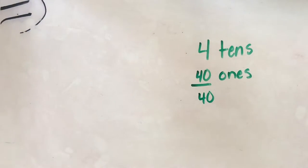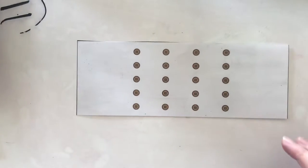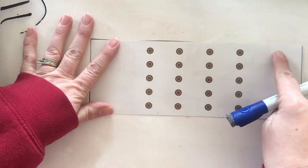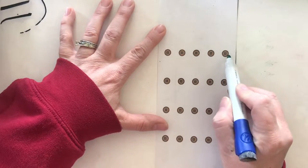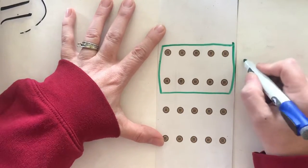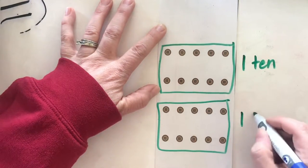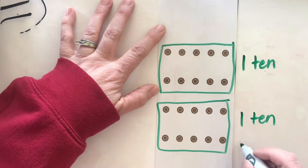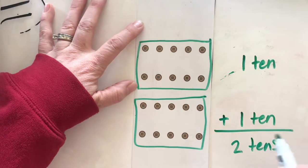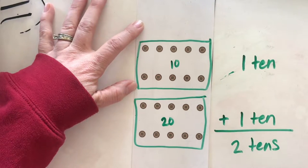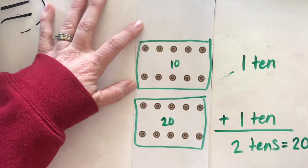Here is another group of buttons. I'm going to count — one, two, three, four — they go five across. If I turn it this way: one, two, three, four, five — yes, and they have partners, so there's one ten. Here is another ten, so I have one ten plus one ten — that equals two tens. Let's count by tens: ten, twenty. The value of two tens is equal to twenty ones, or just twenty.